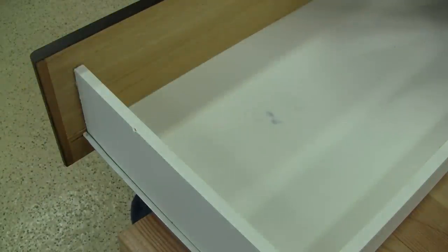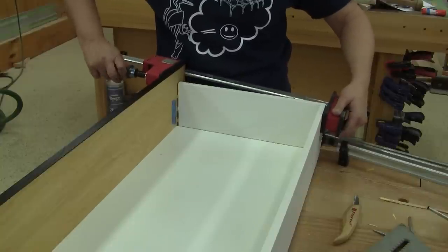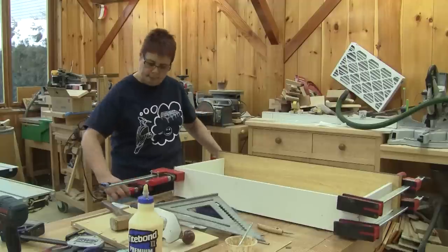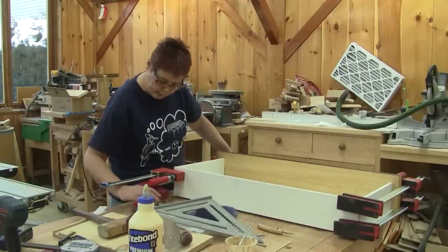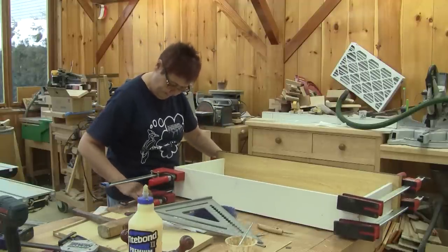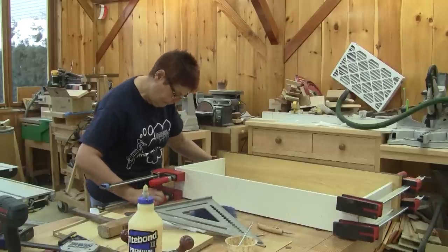Alain reminds me to check it for squareness. Because it's a cheap piece of furniture, it's all crooked. So I decide to clamp it first. I use two clamps on each side, but it's still not square.